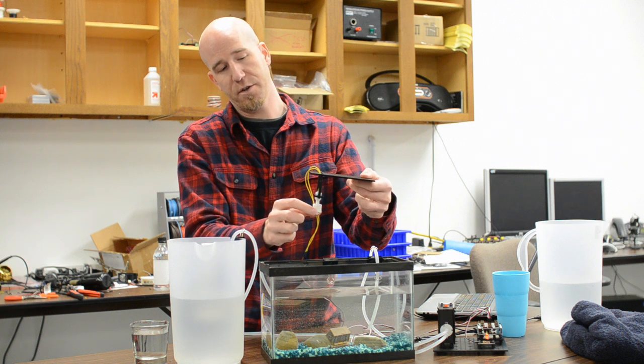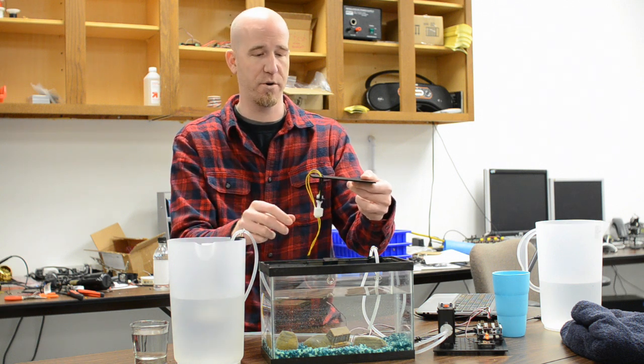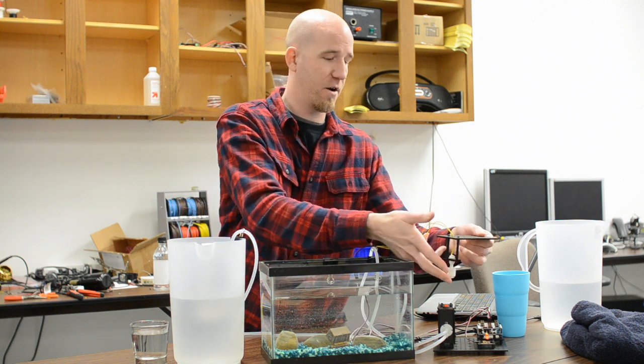The way a float switch works is you have a little float and oftentimes there's a magnet or something in there and a reed switch on the inside so that there's nothing exposed. And you can see that when I move it up and down the light goes on and off.